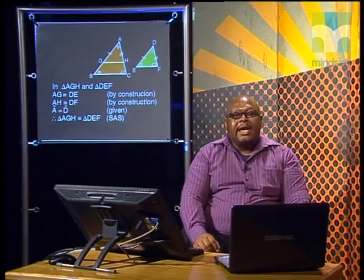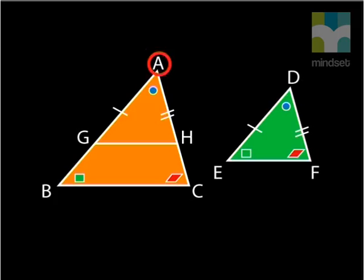That's also easy. Angle A is equal to angle D. Fortunately for us, this is the included angle between the corresponding sides that are equal. Let's write this all down formally.